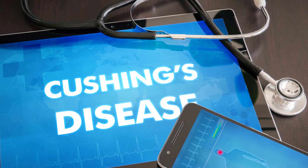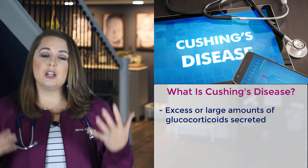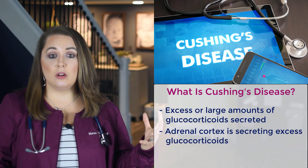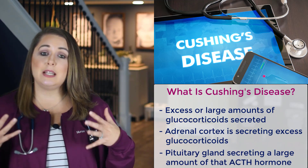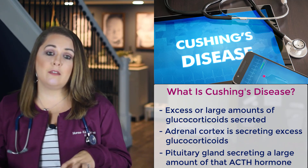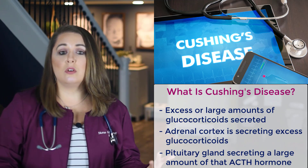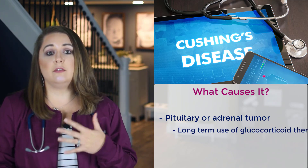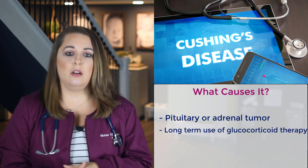Next, let's talk about Cushing's disease. We said Addison's occurs when there's a shortage of glucocorticoids from the adrenal cortex — Cushing's is just the opposite. Cushing's occurs when there's an excess of glucocorticoids being secreted. This can happen because the adrenal cortex is secreting excess glucocorticoids, or because the pituitary gland is secreting large amounts of ACTH, which drives cortisol production. Cushing's disease can result from a pituitary or adrenal tumor, or from long-term use of glucocorticoid therapy for immune conditions like allergies, psoriasis, eczema, and other autoimmune conditions.